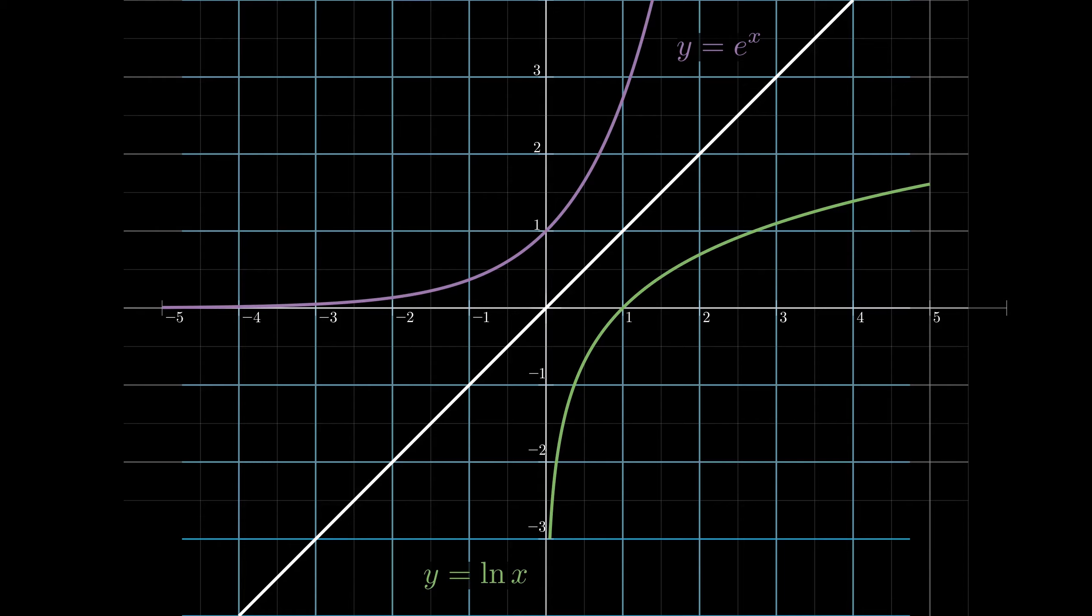The horizontal asymptote on the exponential is y equals zero, so the vertical asymptote on the log function should be x equals zero.